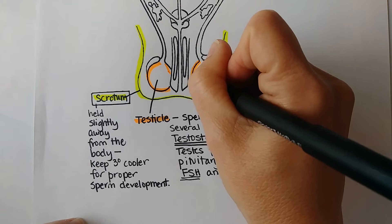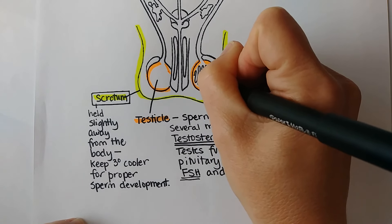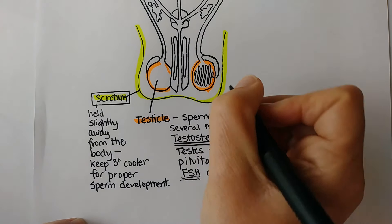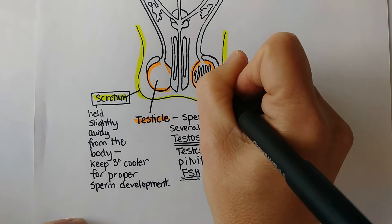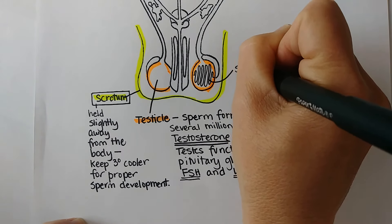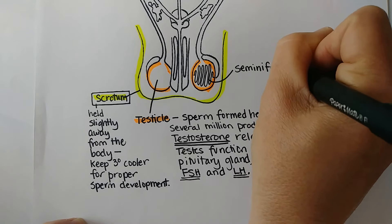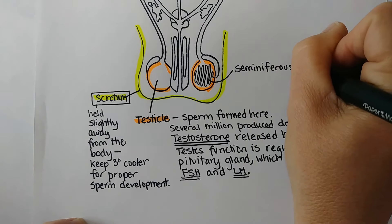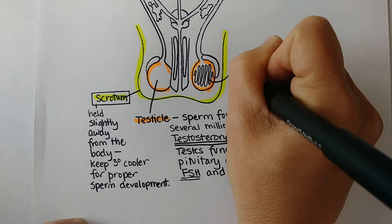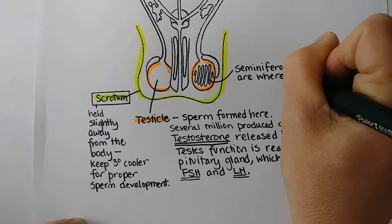Inside each testicle there are long tubules called the seminiferous tubules, and that is where the sperm develop.